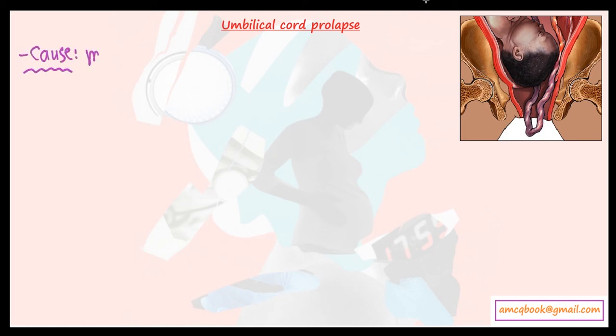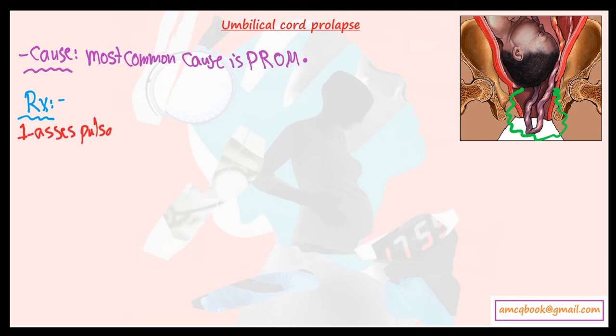Umbilical cord prolapse - it's very important. The cause, as obvious, most common cause is preterm rupture of membrane. Now the most important thing is the treatment. What is the first step in case of umbilical cord prolapse? First step to be done is to assess the pulsation of the umbilical cord by your hand to see if the fetus is alive or not. So first, check the pulsation.